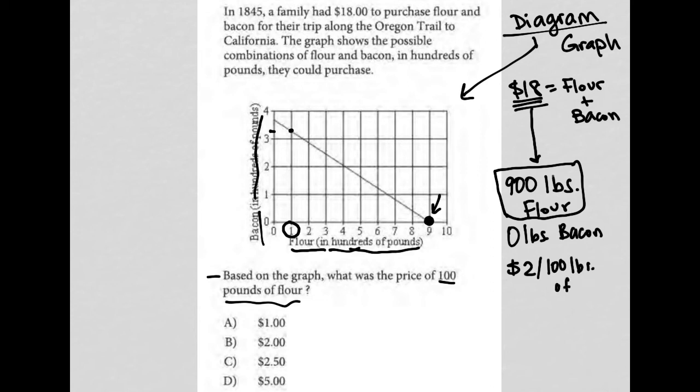If it's $2 for 100 pounds, then we multiply by nine and get $18 for 900 pounds, which is exactly what the question tells us. So the answer must be choice B, $2 per 100 pounds of flour.